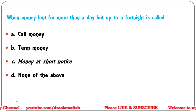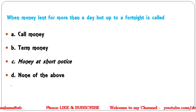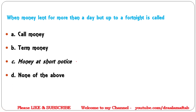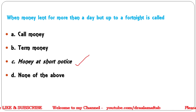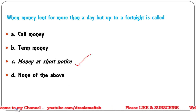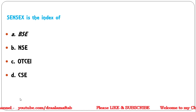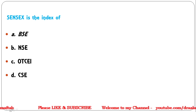Next question: when money is lent for more than a day but up to a fortnight (14 days), it is called — call money, term money, money at short notice, or none of the above? The correct answer is money at short notice, also called the notice market.